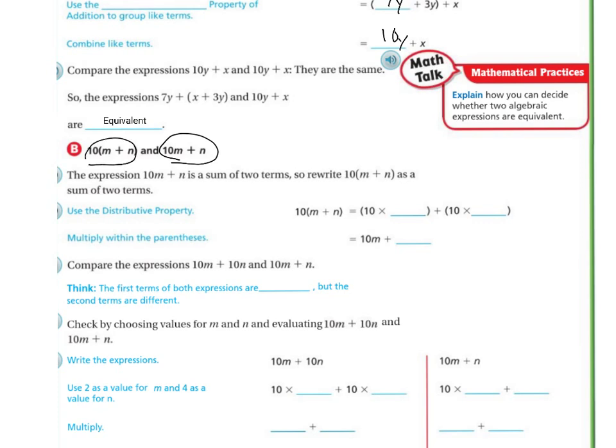First, we're going to use the Distributive Property. Remember, that's where you take this 10, and you multiply it times the m, and then you multiply it times the n. So we have 10 times m and 10 times n. When I multiply within the parentheses, this one is 10m, and this one is 10n.